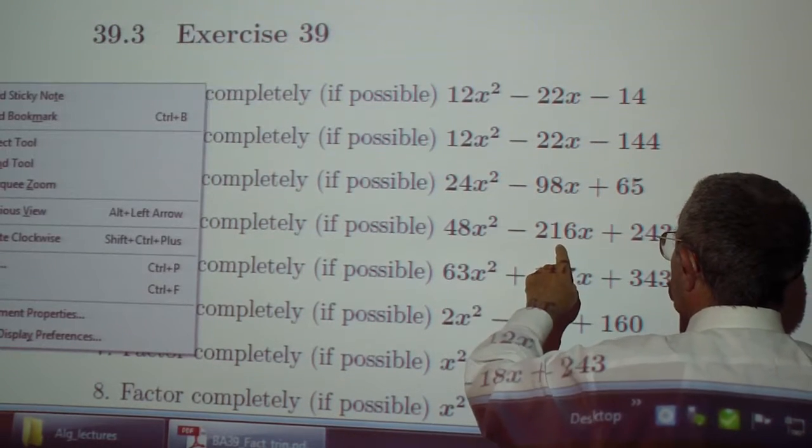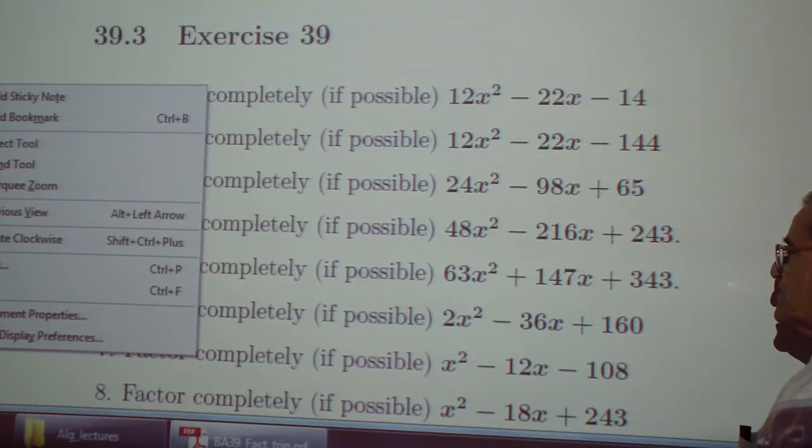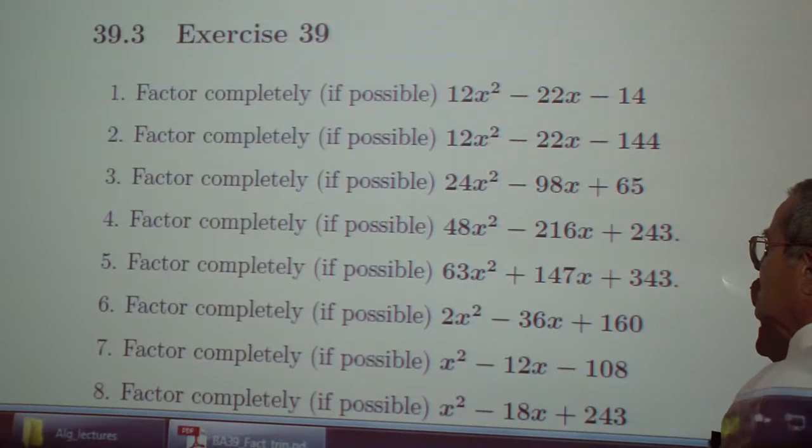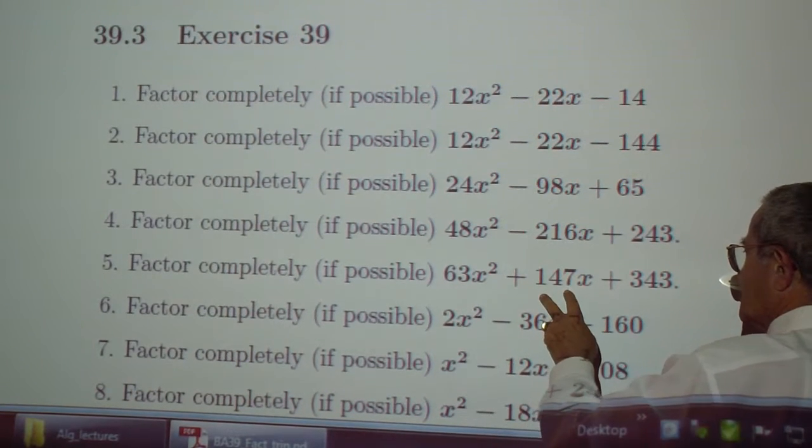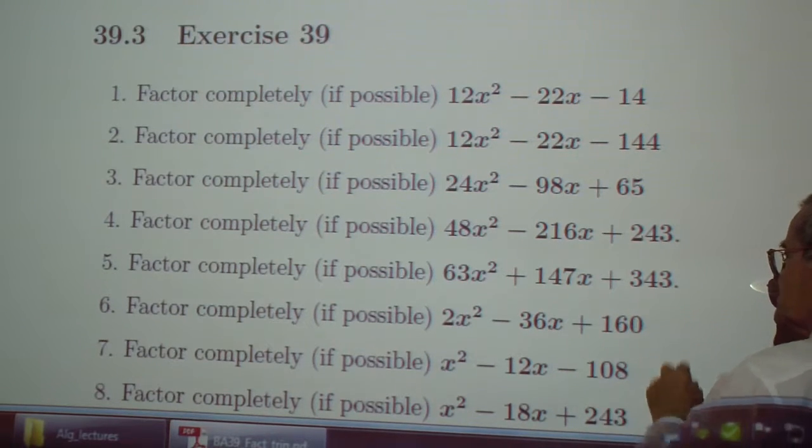48x squared minus 216x plus 243. 63x squared plus 147x plus 343.